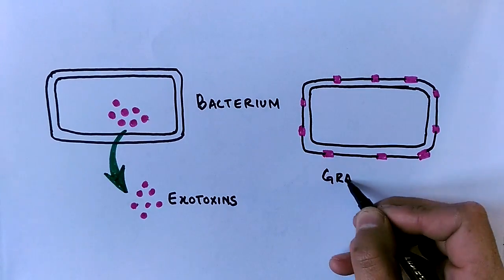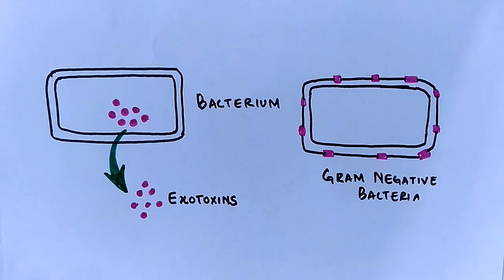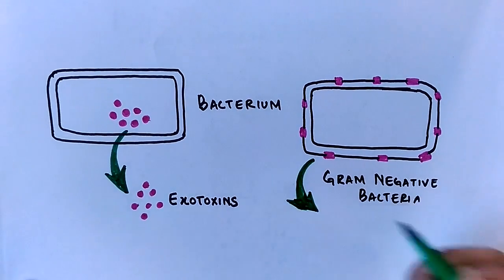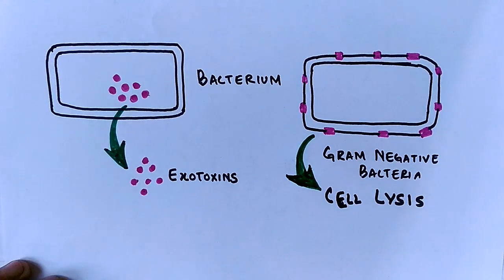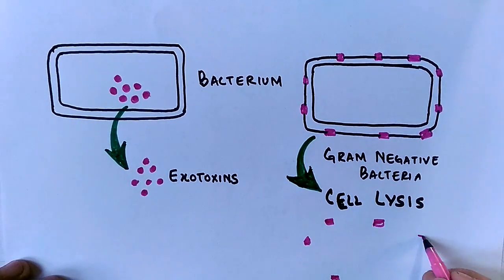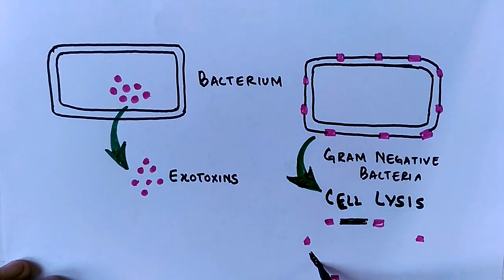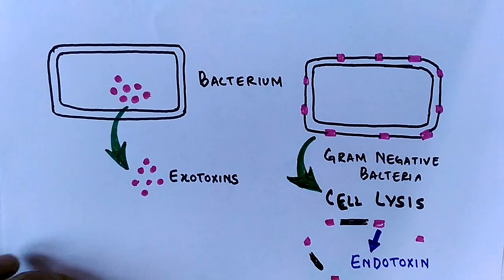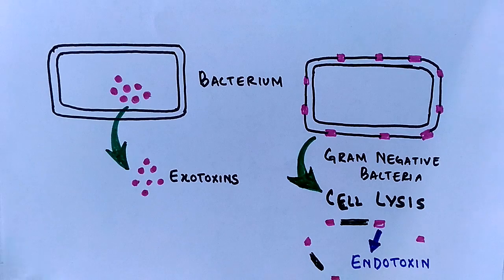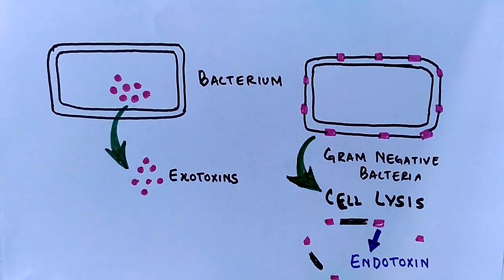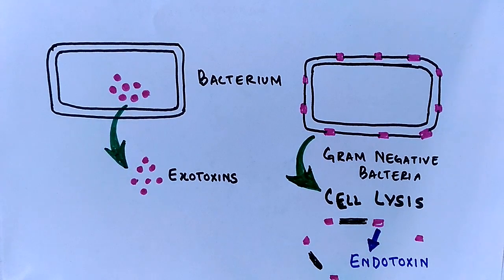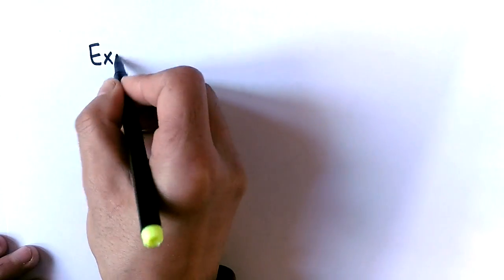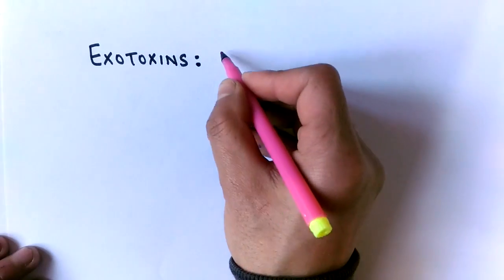In gram-negative bacteria, the LPS molecule — or endotoxin — is embedded in the outer layer of the cell wall, because endotoxins are a part of that cell wall. These endotoxins come into action only when the cell undergoes lysis, when the cell dies. The inner part of the endotoxin is Lipid A, which is toxic in nature and is present inside the cell wall. It only comes into contact with other cells when the bacterial cell dies, which is why it causes toxicity upon bacterial cell death.